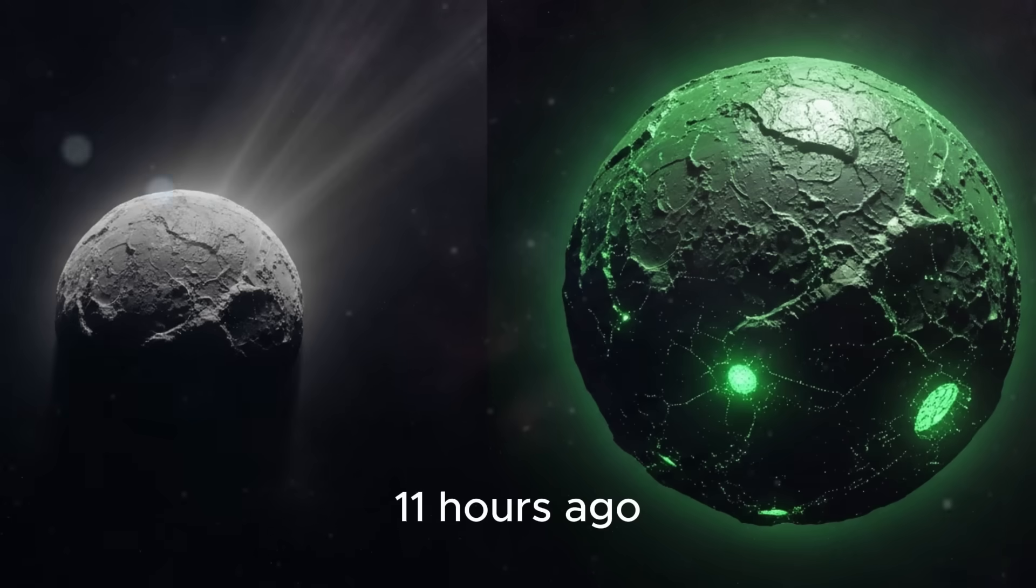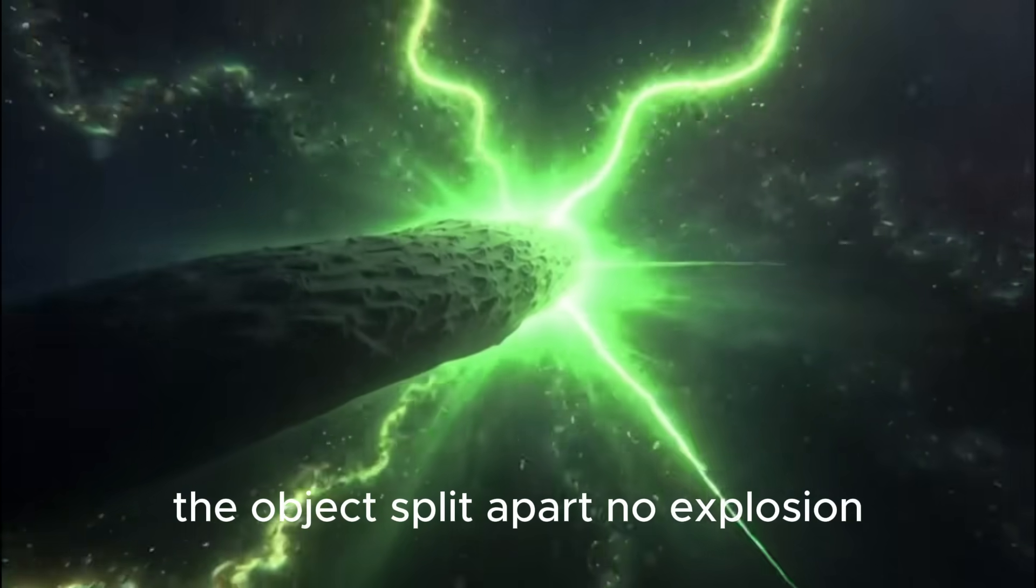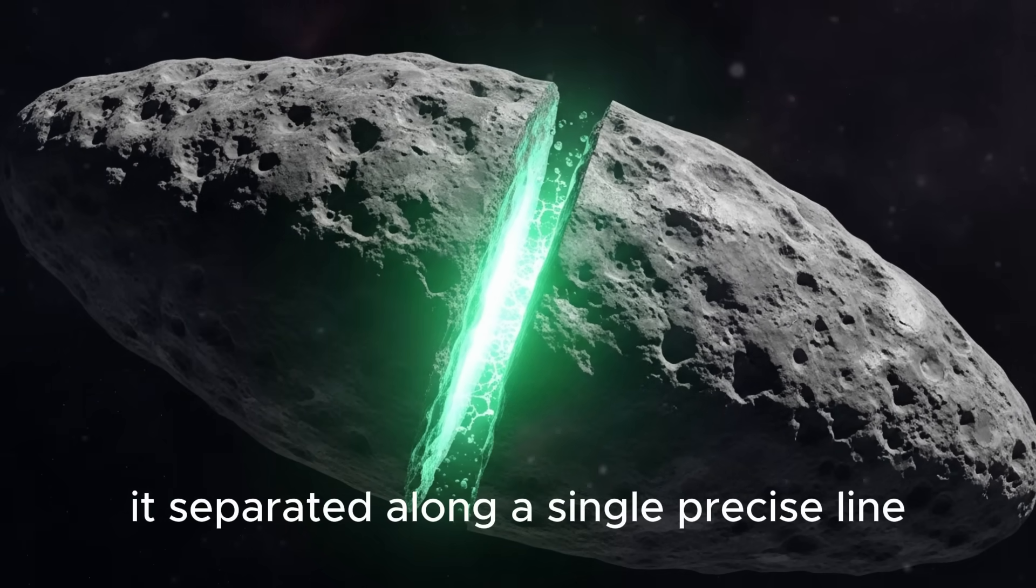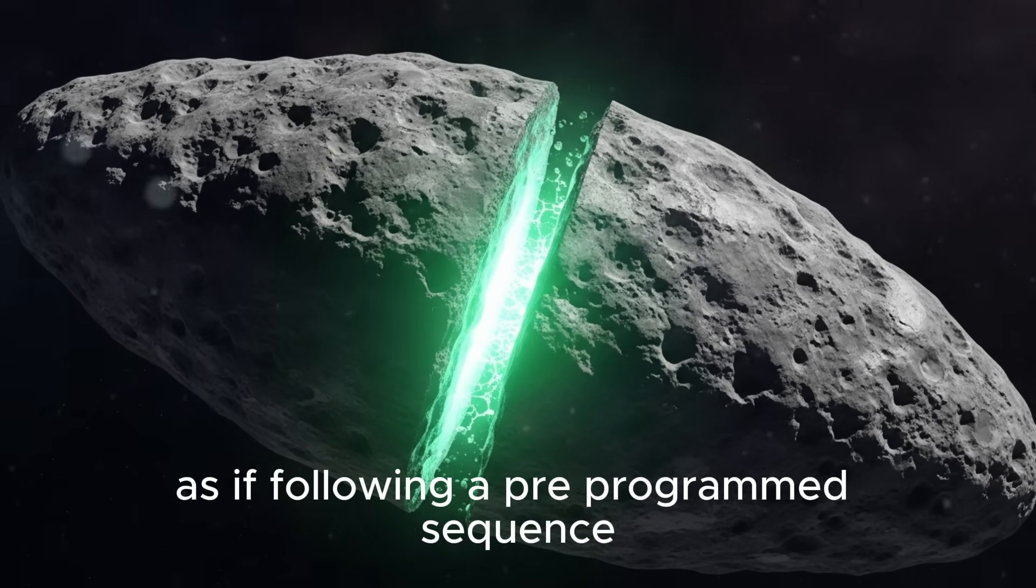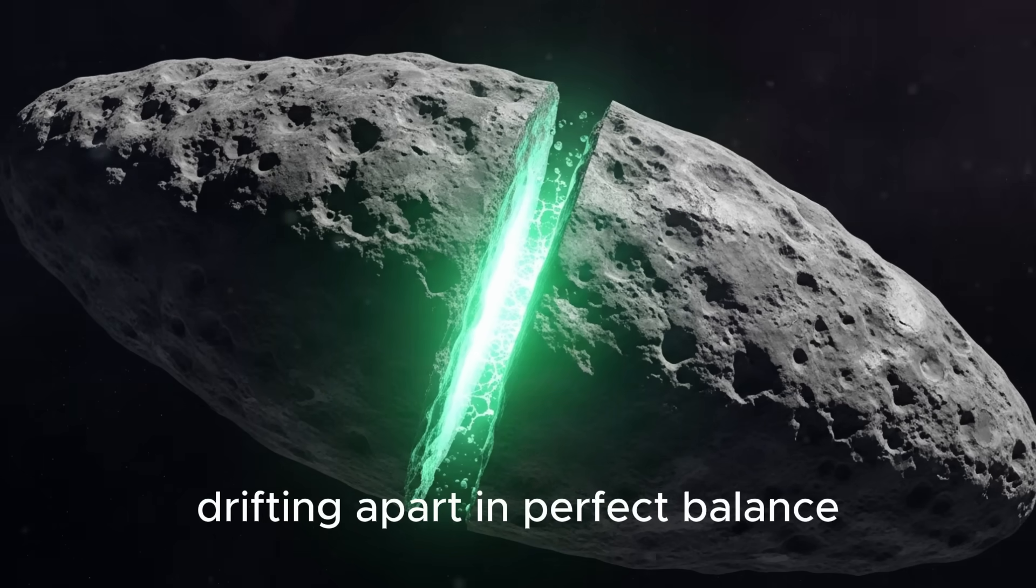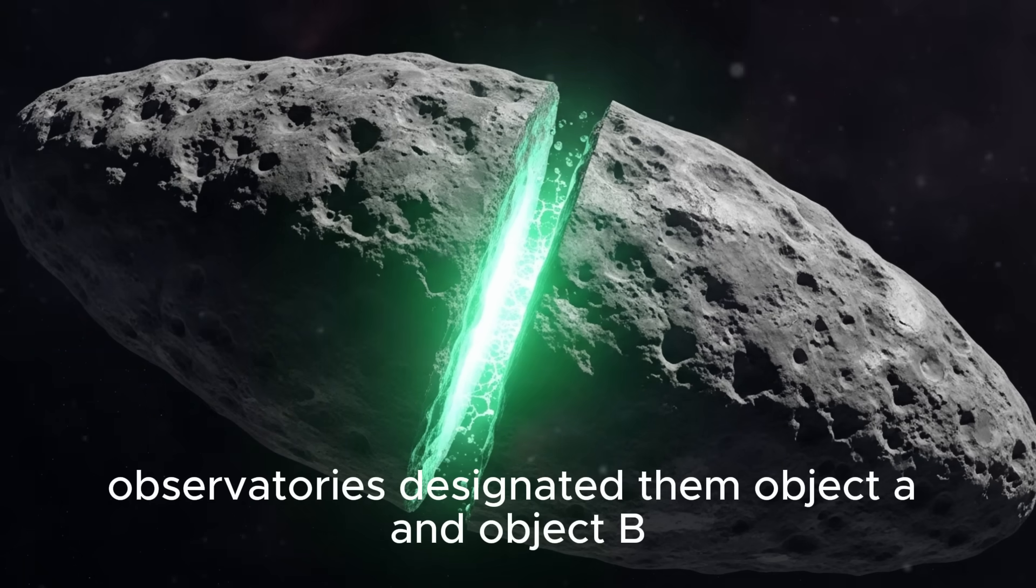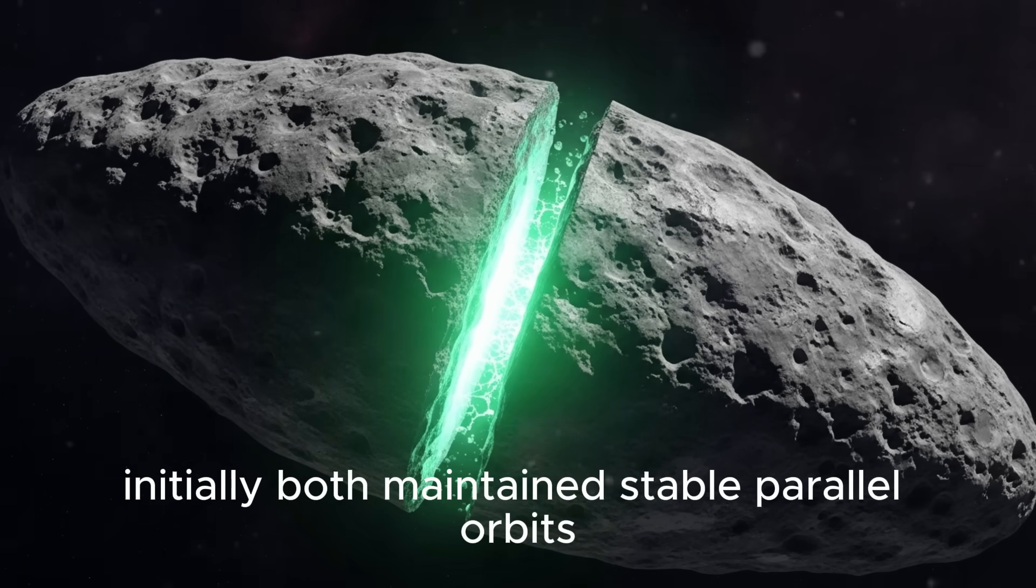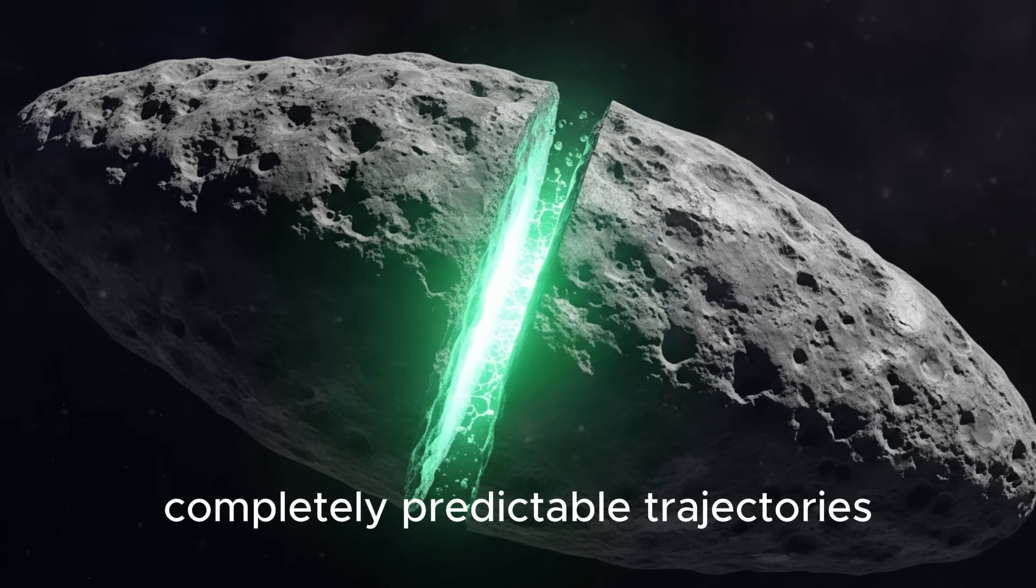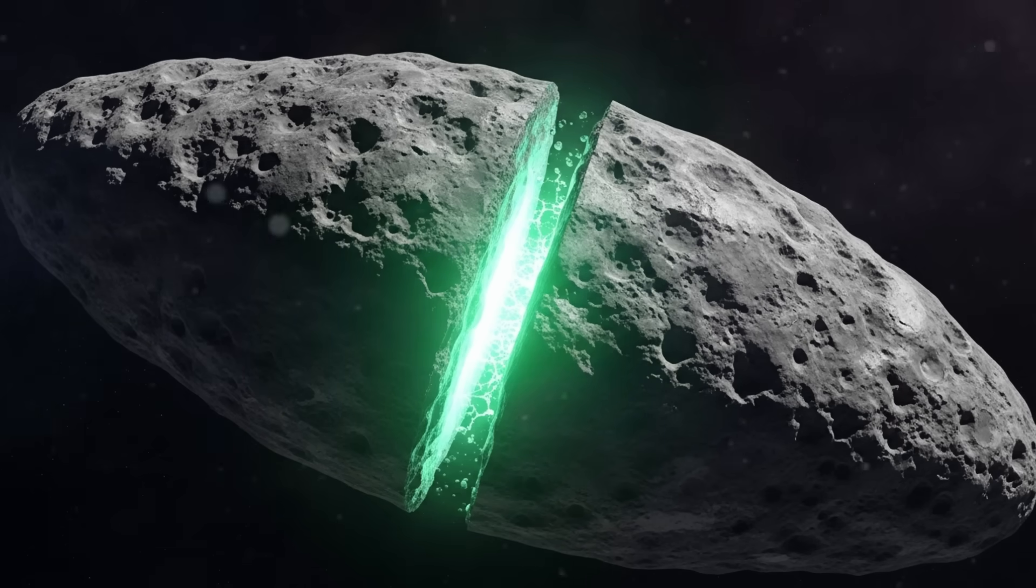11 hours ago, after that long period of unnatural stability, the object split apart. No explosion, no fragmentation, no debris field. It separated along a single precise line as if following a pre-programmed sequence - two halves exactly equal in size, drifting apart in perfect balance. Observatories designated them Object A and Object B.